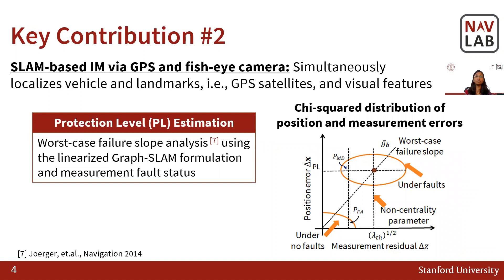Secondly, to estimate protection levels, we derive the worst-case failure slope using the linearized GraphSLAM formulation and the estimated fault status. For this, we model the position errors as a chi-square distribution with a predefined non-centrality parameter that indicates a threshold on the non-faulty measurement residuals.